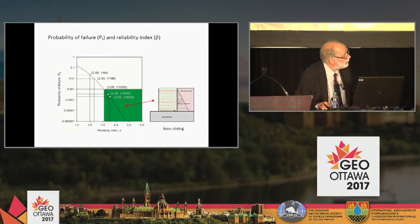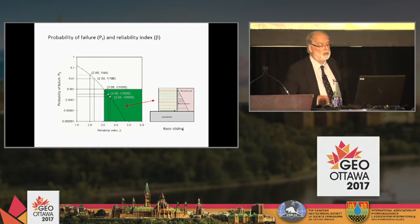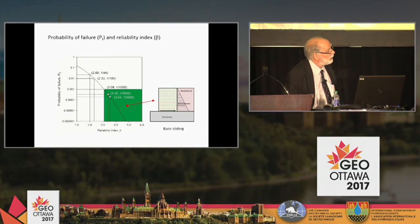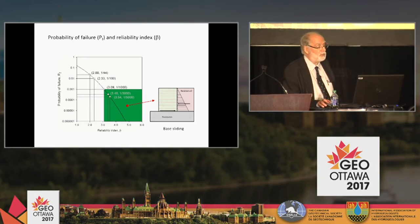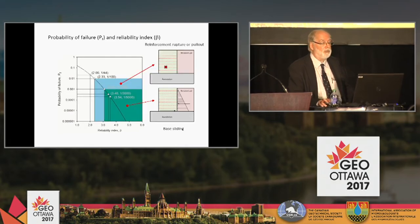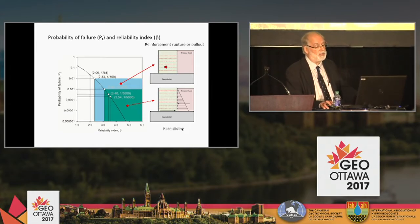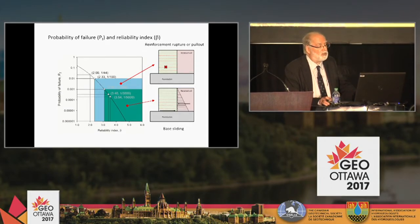This plot shows values of reliability index and probability of failure that may be acceptable for external modes of failure for a gravity wall structure, such as base sliding. Depending on the regulator and the code, values of 1 in 1,000 or perhaps as low as 1 in 5,000 may be acceptable, with a corresponding reliability index matching those probabilities. For the internal stability limit states for MSE walls, probabilities of failure of 1 in 100 are acceptable, because these systems are highly strength redundant — if one layer fails due to rupture or pullout, the load is shed to its neighbor and the system remains intact.